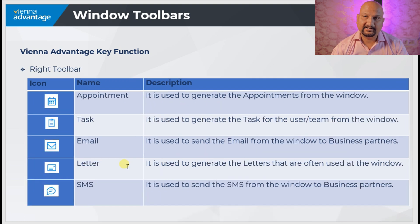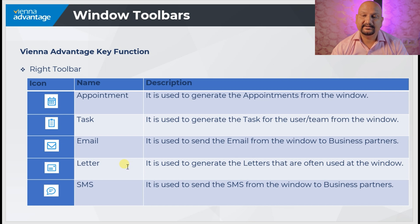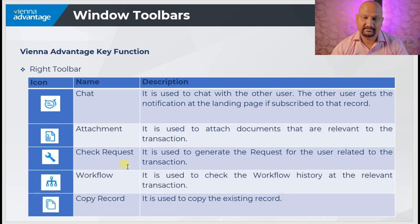In the right toolbar, there is an appointment button used to generate appointments from the window. Then we have task, used to generate tasks for the user or team from the window. We have email, used to send email from the window to business partners. Then letters, used to generate letters commonly used at that window. And SMS, used to send SMS from the window to the business partner.